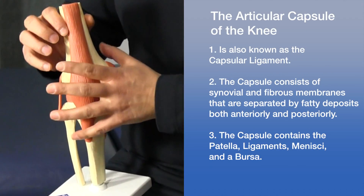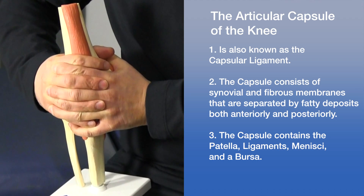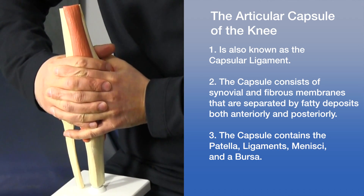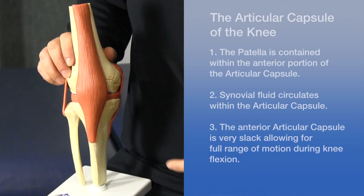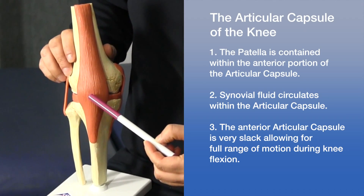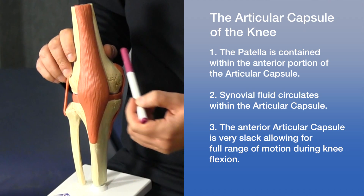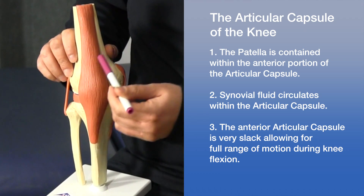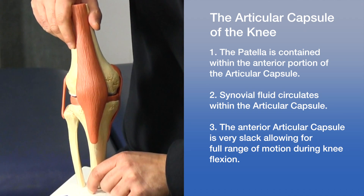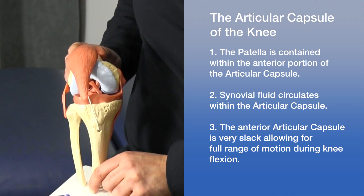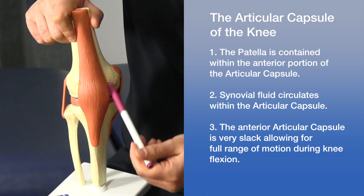The knee is surrounded by a thick capsule that attaches just outside the articular surfaces of the femur, patella, and tibia. The patella itself is contained within the anterior portion of the capsule. The synovial fluid that circulates throughout the knee circulates within the capsule. The anterior portion of the capsule is quite slack, allowing for good range of motion in knee flexion. During extension, as the leg straightens, the capsule forms deep folds on either side.